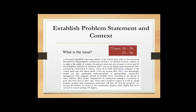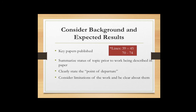After the problem statement, consider what the background is and whether there are expected results to think about early in the process. Are there key papers published? Summarize the status of the topic prior to what is described in the paper — it's important to set a point of departure. The current literature has studied this topic in certain areas, and your paper will depart from or build upon that literature in a specific way. Also consider limitations of the work and be very clear about them in this section.